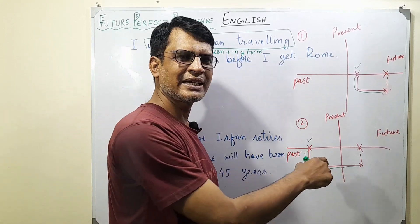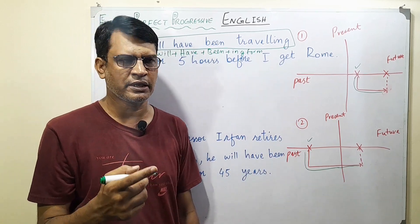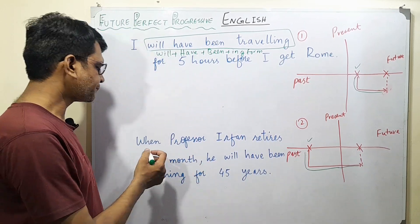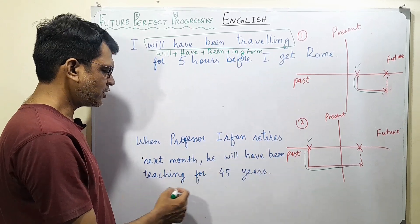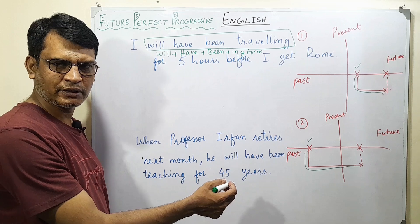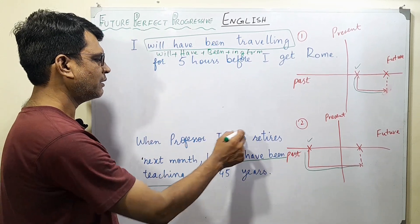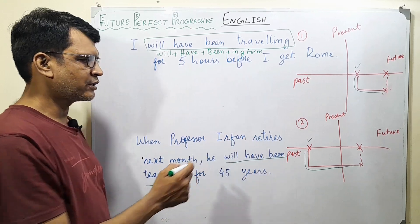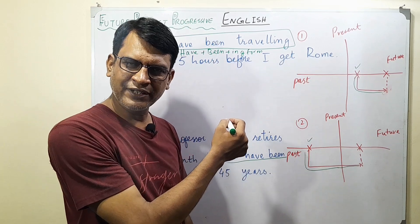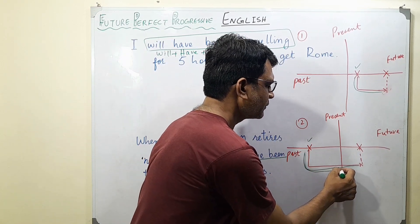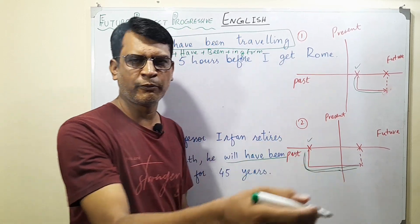For this case as well, we use future perfect progressive or future perfect continuous. The example: when Professor Phan retires next month, he will have been teaching for 45 years. So he started teaching 45 years back, continued until the present moment, and will also continue for one more month.